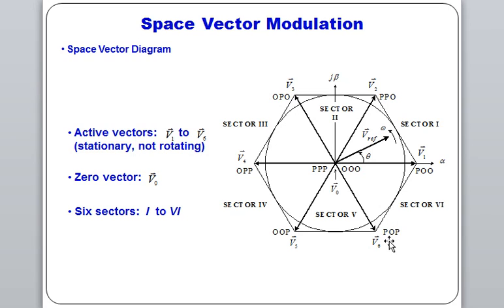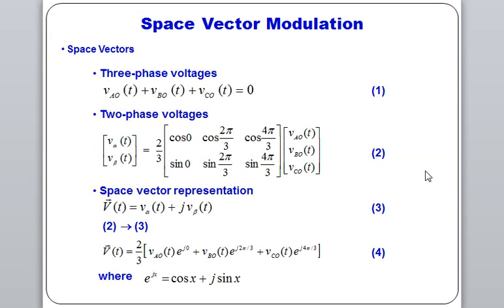There is a reference voltage v-reference, which rotates at angular speed omega with respect to angle theta from the zero vector. In reference voltage terms, we define all the sector voltages. There are 6 active vectors, and the zero vectors have value zero. Triple-P and triple-O are the two zero vectors. In three-phase voltages: vao + vbo + vco in the time domain equals zero, and we define space vector modulation in terms of two-phase voltages.